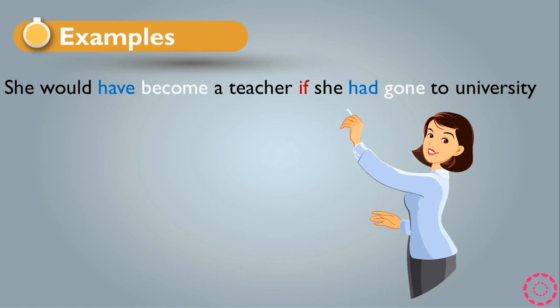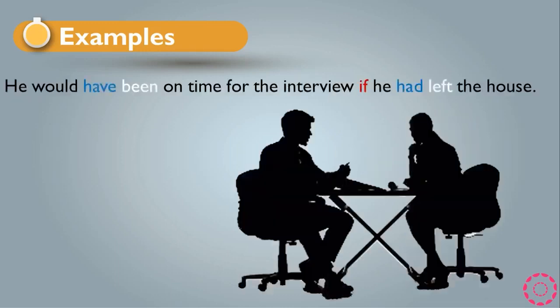Now, in this sentence we use if in the middle. So it becomes: 'She would have become a teacher if she had gone to university.' In this sentence we use the second rule of third conditional, which is if in the middle. For example: 'He would have been on time for the interview if he had left the house.' When we use if in the middle, we have to remove the comma.